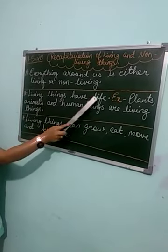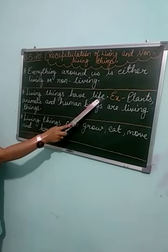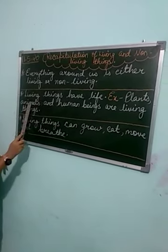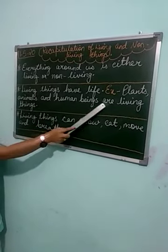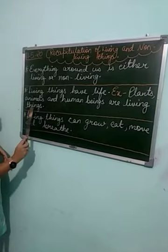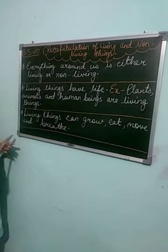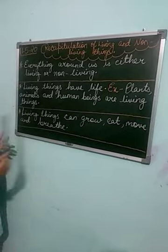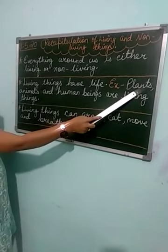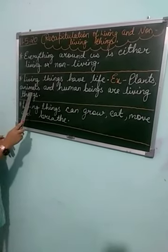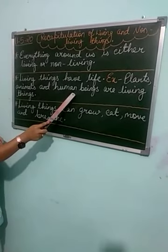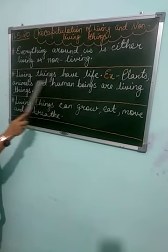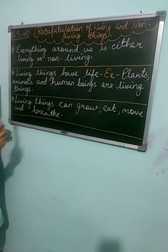Point number two: living things have life. Examples — plants, animals, and human beings are living things. उनमें life होती है. Living things के examples क्या हैं? Plants, animals, human beings. Human beings means we people — we are the human beings. We all are living things.